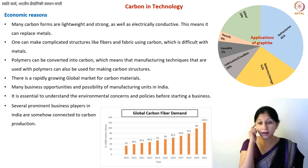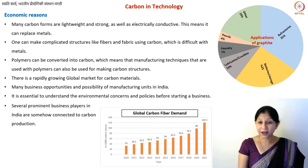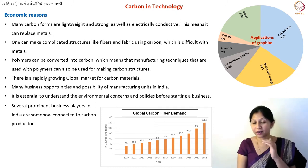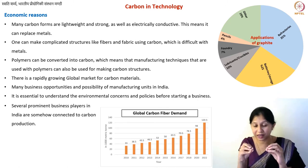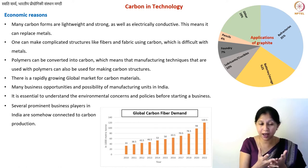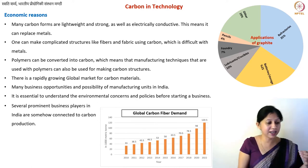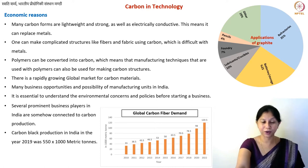In India and all over the world, several prominent business players are involved in carbon-based manufacturing. Sometimes you don't realize it because many manufacturers are making raw materials for other industries. For example, car tires are made of carbon-reinforced rubber — carbon black is mixed into rubber for strengthening. A lot of companies manufacture this carbon black reinforcement material. In fact, India happens to be the second largest producer of carbon black in the world, with China being first.